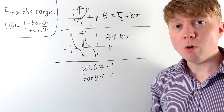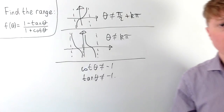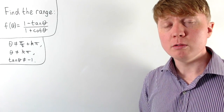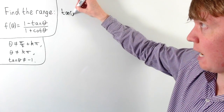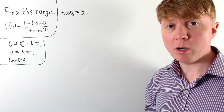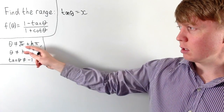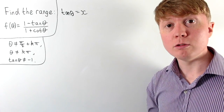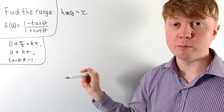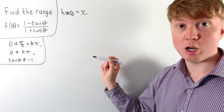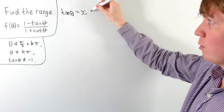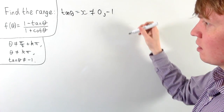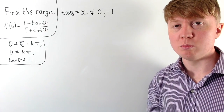Now that we have these, we can start working out the possible outputs to find the range. We'll replace tan theta and cot theta with a new variable x. If x equals tan theta, let's think about which values x is allowed to take. The restriction that theta can't be π/2 plus an integer multiple of π just ensures tan theta is well defined, so it doesn't restrict x. But where theta is a multiple of π, this means tan theta can't be zero — otherwise cot theta wouldn't be well defined — so x can't equal zero. We also have the added restriction that x, or tan theta, cannot equal -1, since that would make the denominator zero.